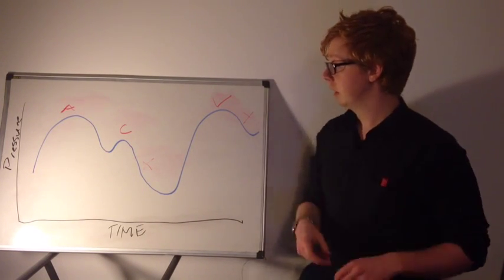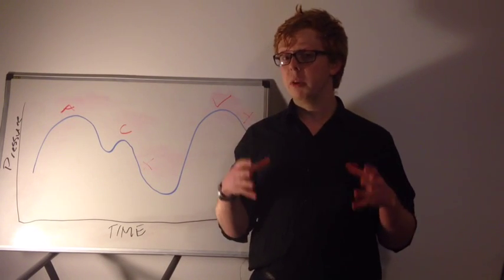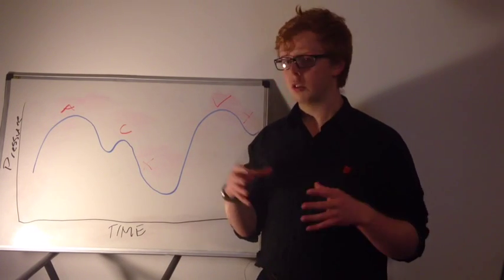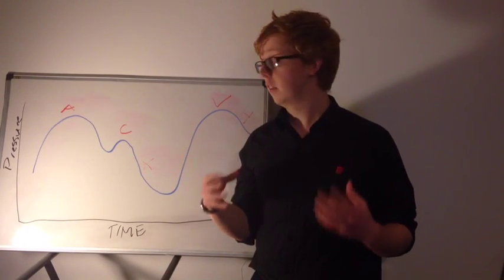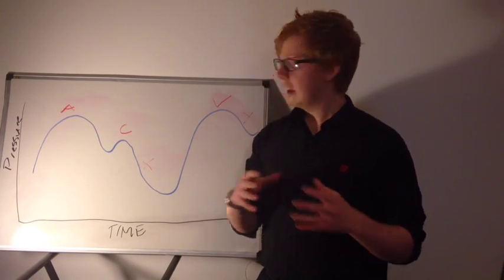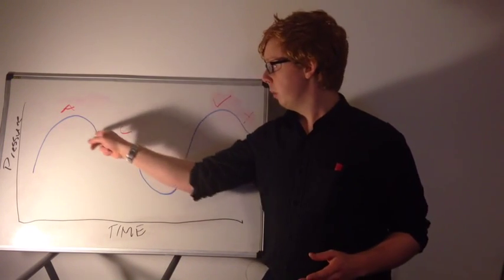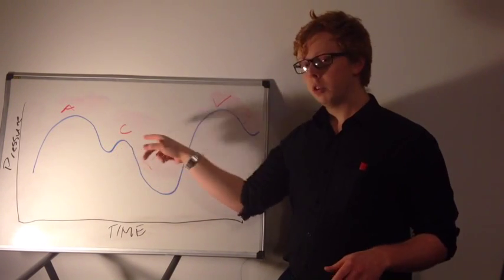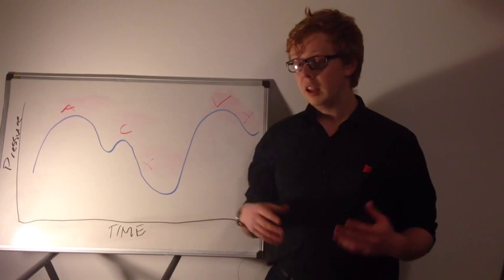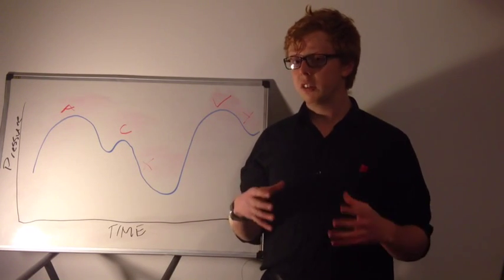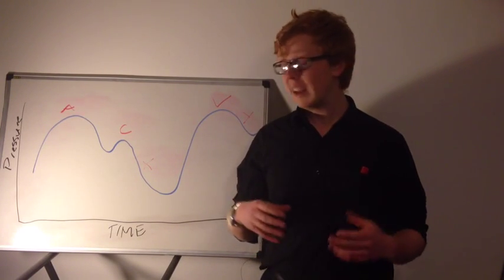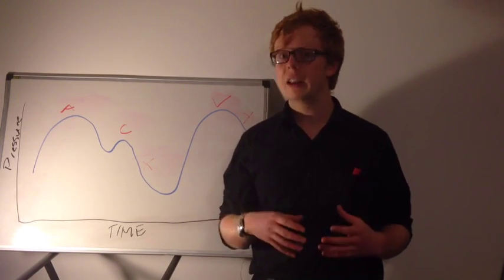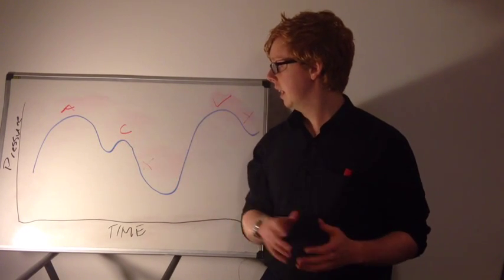So let's start with A. This represents your atrium contracting. And as this contracts, it increases the pressure. And this is what gives you your first peak. And as the atrium relaxes, it just drops down, and you get this small notch here. And this C represents, as your ventricles contract, it pushes your tricuspid valve into your right atrium. And this just increases the pressure ever so slightly, giving you that small peak there.